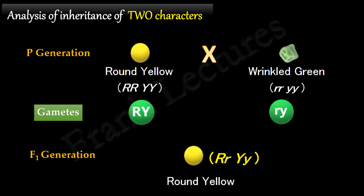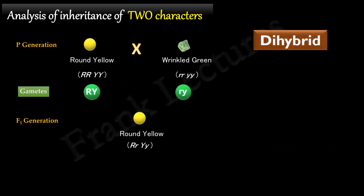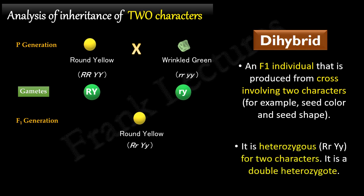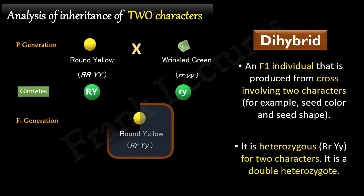This F1 plant is known as dihybrid. Di means two. Dihybrid is an F1 individual that is produced from a cross involving two characters. It is heterozygous for two characters. We can also say that dihybrid is a double heterozygote.